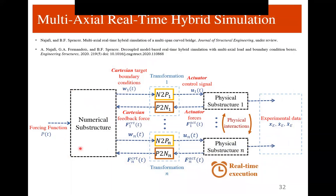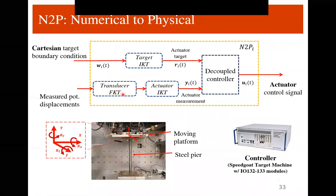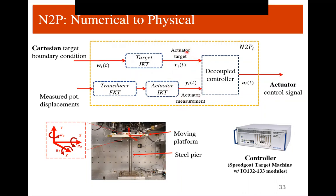Now let's talk about the transformation layers between numerical and physical substructures — the numerical-to-physical (N2P) process. The numerical substructure outputs a Cartesian target boundary condition. Combined with measured potentiometer displacements from the experiment, a series of target inverse kinematic transformation, transducer forward kinematic transformation, and actuator inverse kinematic transformation produces actuator signals. These then pass through a decoupled control algorithm to produce the final actuator control signal. This entire N2P algorithm runs on the SpeedGoat target machine controller.